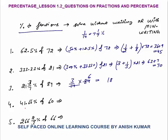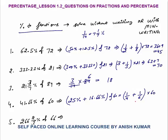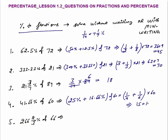41.66% — you can break this like 25% plus 16.66% of 60. Now 25% means 1/4, and 16.66 or 16 2/3% is 1/6; of means multiply. So 1/4 of 60 is 15, and 1/6 of 60 is 10. 15 plus 10 — the answer is 25.